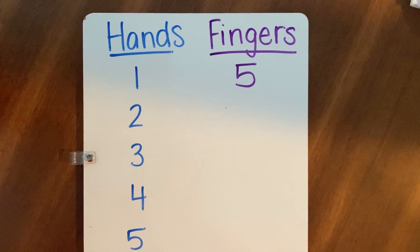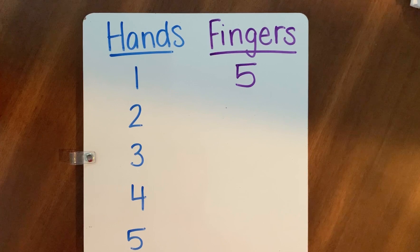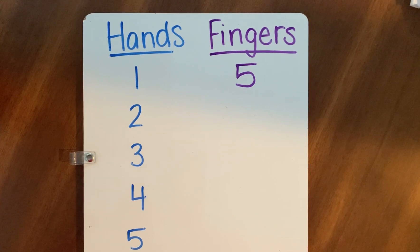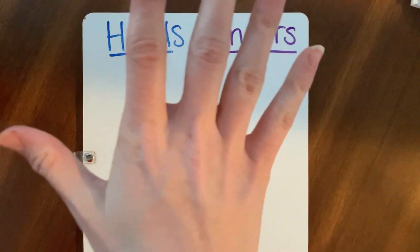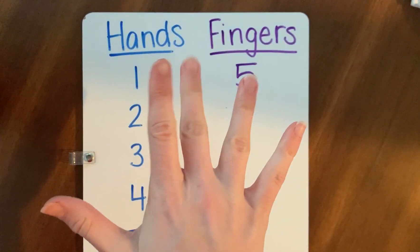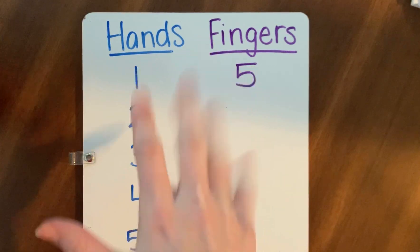Hi everyone! We're going to talk about hands and fingers today. So we already know that a hand has five fingers — one, two, three, four, five.